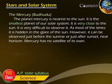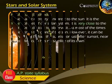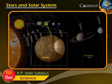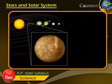Mercury. The planet Mercury is nearest to the Sun. It is the smallest planet of our Solar System. It is very close to the Sun. It is very difficult to observe it.